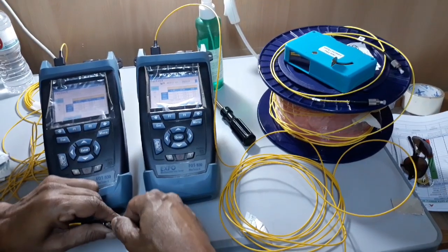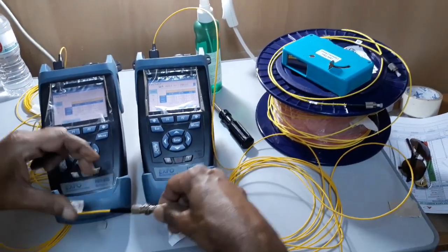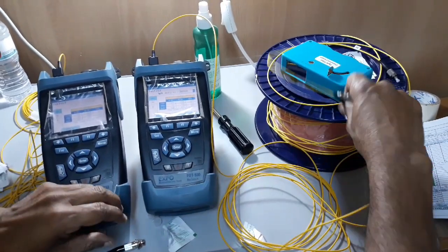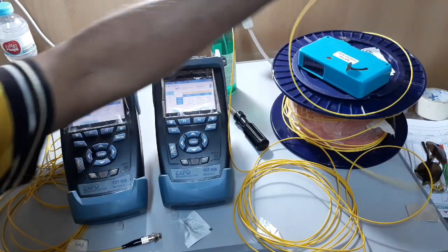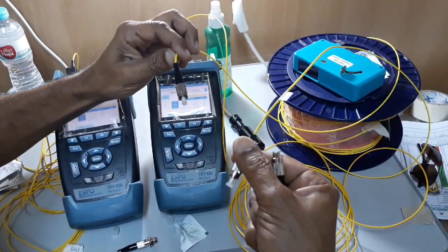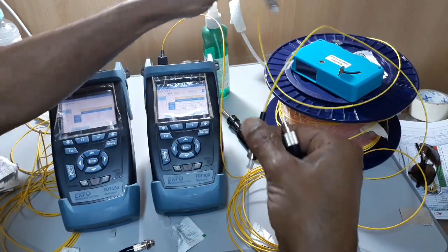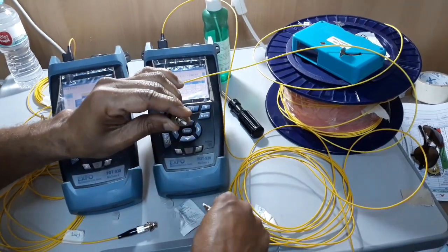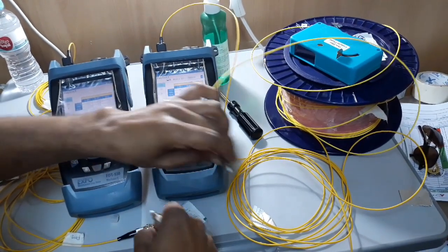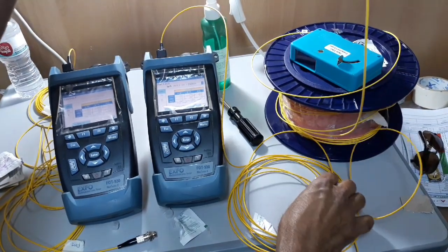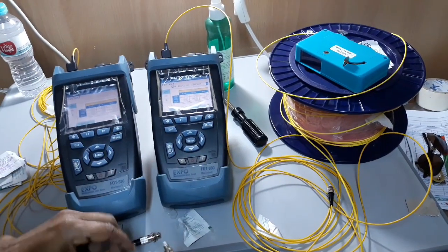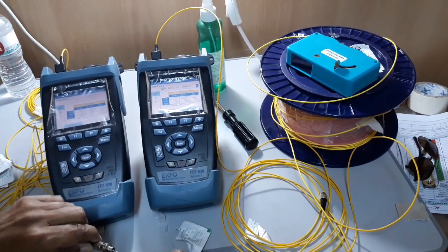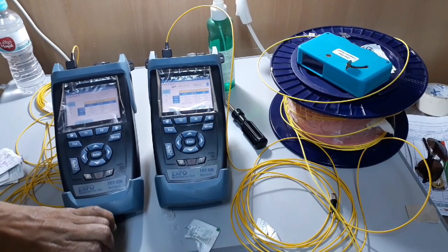We have to perform referencing at the master and remote OLTS test sets. After performing reference test, we should not touch or damage the connector at equipment side. Referencing detects the loss derived from the components used for the test, example connectors and patch codes. The result shows the loss produced by the system under test only.